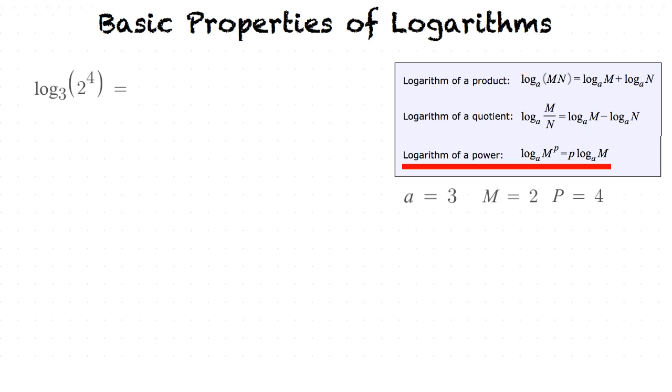So with the power property, it says we can take the exponent on the component m and put it outside of the logarithm. So we end up with 4 log base 3 of 2.